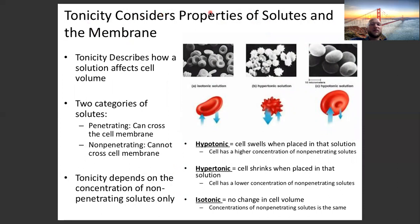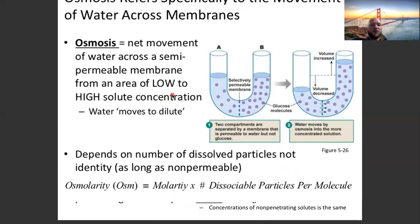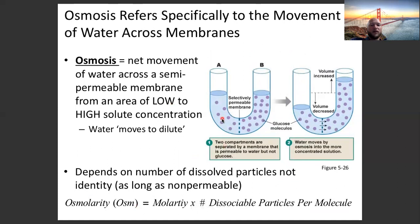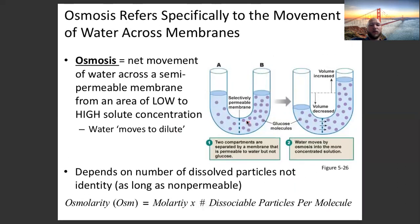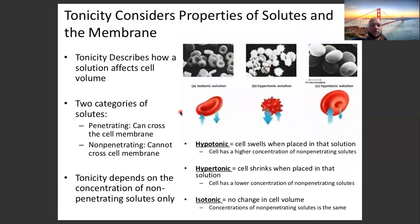Tonicity considers properties of a solute and the membrane. Osmolarity is the amount of dissolved particles within a solution; tonicity talks about what's going to happen to a cell when put into different osmotic situations. Tonicity describes how a solution affects the cell. Tonicity depends on the concentration of non-penetrating solutes — penetrating solutes can cross the cell membrane; non-penetrating solutes cannot.